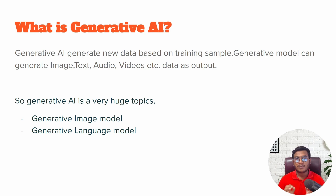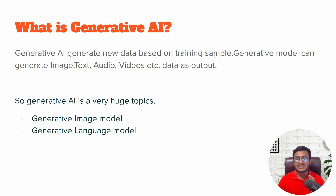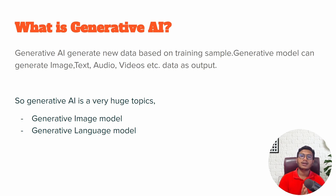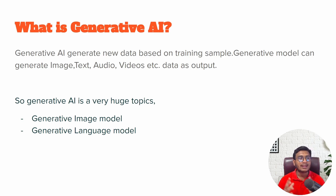Generative models are different. Generative models can generate new data based on training samples. Here you give some training samples, which is called unstructured data. Based on this training sample data, it will try to generate some new data. Inside Generative AI, whenever you give any kind of unstructured data as input, your generative model will try to understand and learn the pattern from it and generate something new. The output can be text, audio, video, and so on.